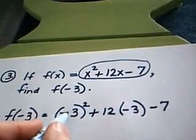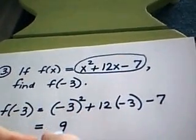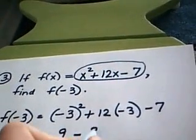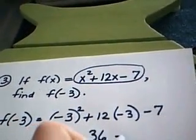Negative 3 quantity squared becomes 9. 12 times negative 3 is negative 36, minus 7.